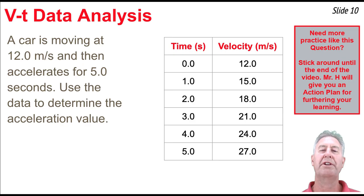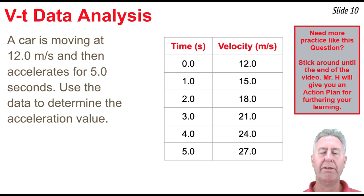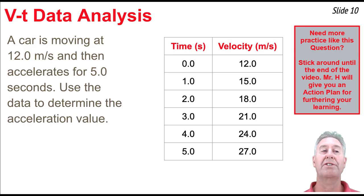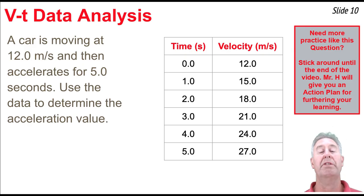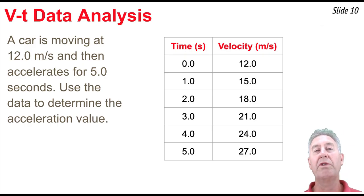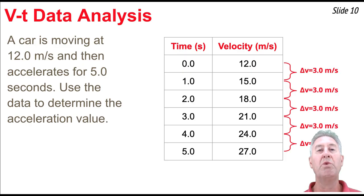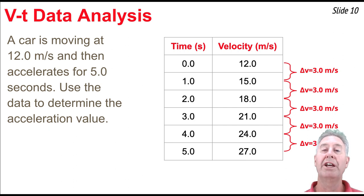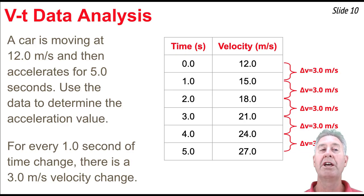Now we look at another car with a velocity-time table. The car is moving at 12 meters per second and accelerates for 5 seconds. We need to determine the acceleration by finding the velocity change per time change ratio. The time column increases by 1 second from row to row, and the velocity column changes by 3 meters per second every 1 second. So the acceleration is 3 meters per second squared.